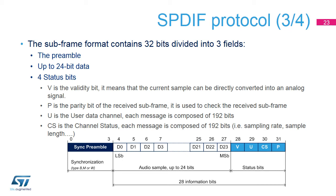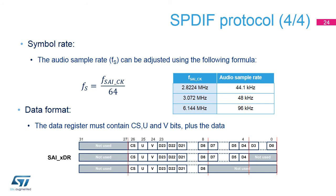Each subframe contains 32 bits divided into three fields: a synchronization preamble allowing the detection of the block and subframe boundaries, a payload of 24 bits, and status bits V, U, CS, and P. The SAI-CK frequency must be adjusted in order to generate the proper audio sample rate, or FS. The data inside the transmit FIFO must be aligned as shown, and the MSB of the data must always be at position 23.